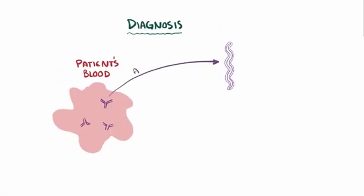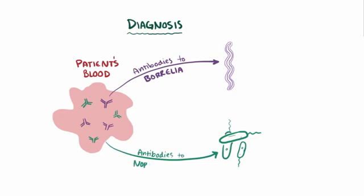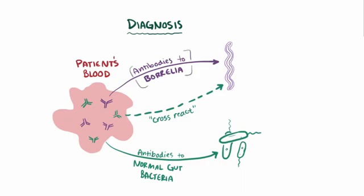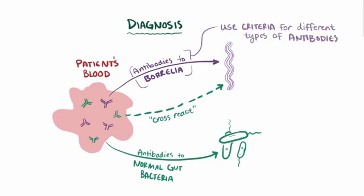The diagnosis of Lyme disease is usually made by looking at antibodies against Borrelia proteins. The tricky thing is that sometimes antibodies cross-react — an antibody formed against a normal bacteria that lives in the gut might cross-react with a Borrelia protein because it looks similar. To help tease apart who really has Borrelia, there are criteria about how many different types of antibodies a person needs to have in order to make a diagnosis more specific and weed out false positives.